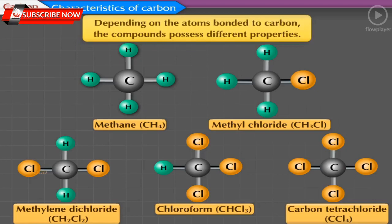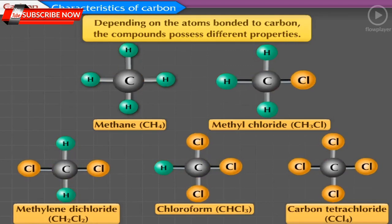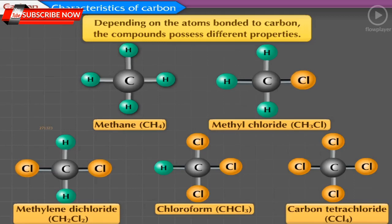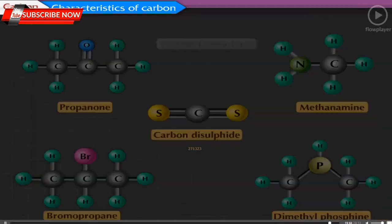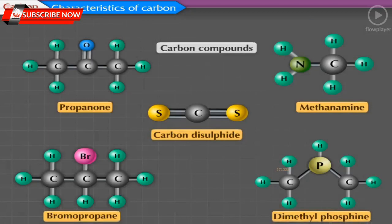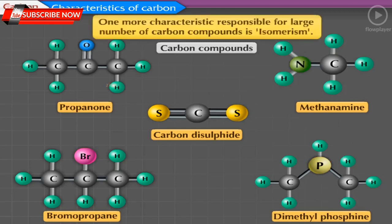Depending on the atoms bonded to carbon, compounds possess different properties. For example, using two monovalent atoms like hydrogen and chlorine with one carbon atom, five different compounds are formed: methane (CH₄), methyl chloride (CH₃Cl), methylene dichloride (CH₂Cl₂), chloroform (CHCl₃), and carbon tetrachloride (CCl₄). Similarly, carbon forms covalent bonds with elements like oxygen (O), nitrogen (N), sulfur (S), halogens, and phosphorus to form different types of carbon compounds. One more characteristic responsible for the large number of carbon compounds is isomerism.